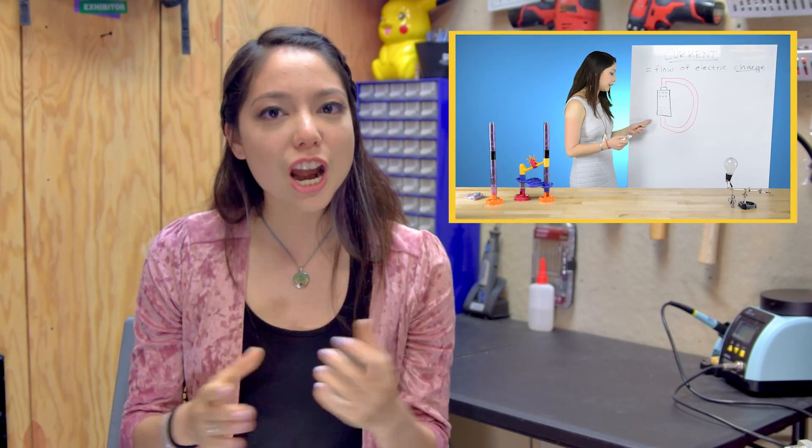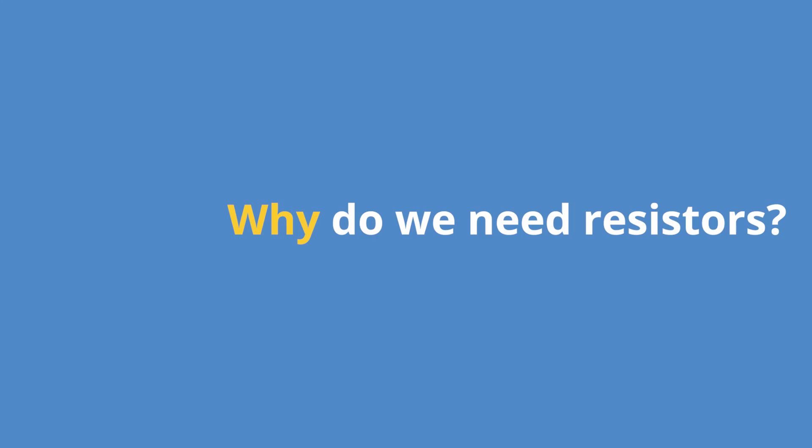Here we're mostly going to be discussing the practical applications of resistors. For more on resistance and Ohm's law, check out our Electricity 101 video, linked down in the description below. The purpose of a resistor within your circuit is to regulate the voltage and the current of a particular spot or component.